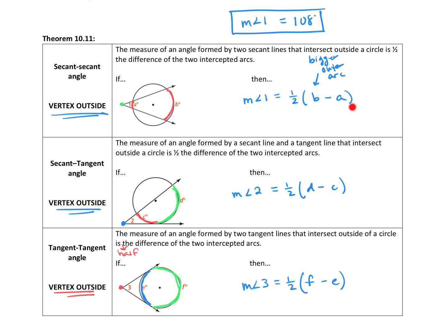Looking at our three theorems, it's the same formula every time. It looks a little different because the angles are formed by different things — two secants, a secant and a tangent, or two tangents — but what they all have in common is that each angle has a vertex outside the circle. When your vertex is outside the circle, the angle is equal to half the difference of the arcs.